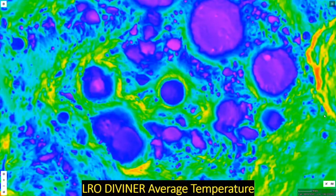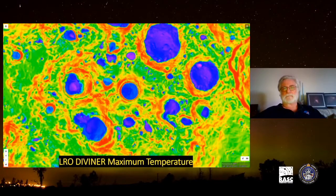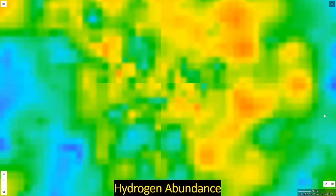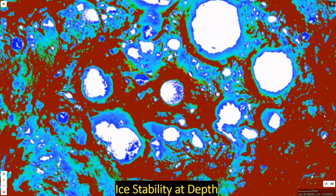In our hunt for water ice, we can look at a temperature map using the Diviner instrument aboard LRO — looking at average or maximum temperatures, good for isolating where to find potential ice deposits. We can use the LAMP instrument aboard LRO to look for potential deposits of surface frost, and neutron spectrometry to look for concentrations of hydrogen, which could give clues to the presence of water. Using thermal modeling we can map ice stability at depth — how far would you have to dig beneath the surface to reach a temperature where ice remains stable? In some permanently shadowed areas you don't have to dig at all — ice can remain stable right at the surface.